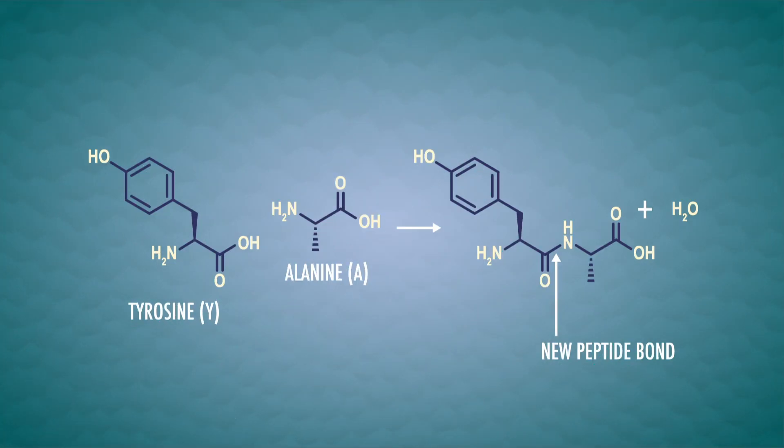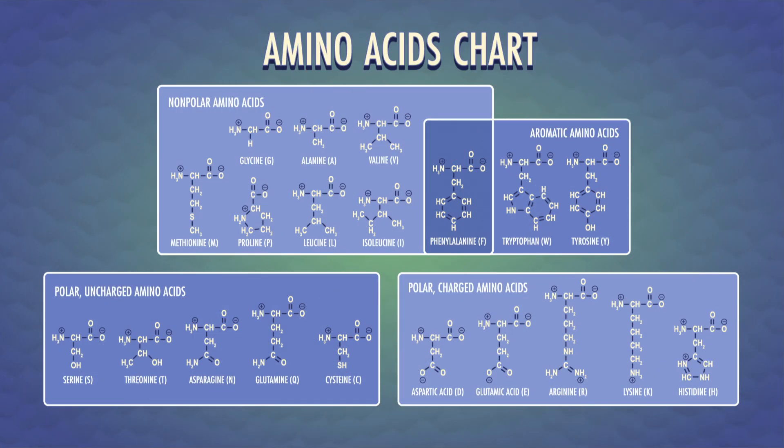Individual amino acids undergo an overall dehydration reaction to form peptide bonds – the name for the amide bond in a protein. The order of amino acids in a protein strand, like in DNA, is called the primary structure. And amino acids have one-letter codes, too. We'll just show them on screen, though, because there's 20 of them, not just four.